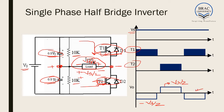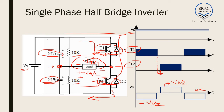One thing to be noted: there is a time delay between the two switches. This time delay is provided so that at no point in time are both T1 and T2 on simultaneously. If both transistors were on at the same time, the voltage source would be shorted and the transistors would catch fire. As a result, there is a time delay between switching on the two transistors. This time delay is called dead time.